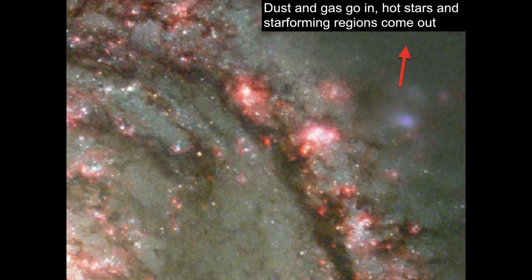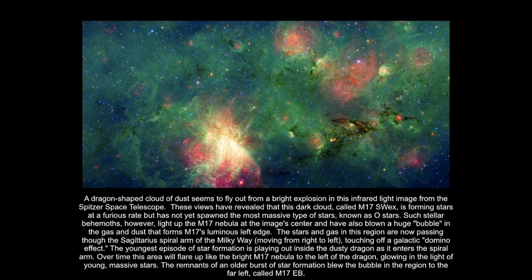Notice you don't have too many bright, hot stars far from the density wave, because the O and B-type stars pretty much detonate before they get a chance to get very far, because they live a very short period of time.